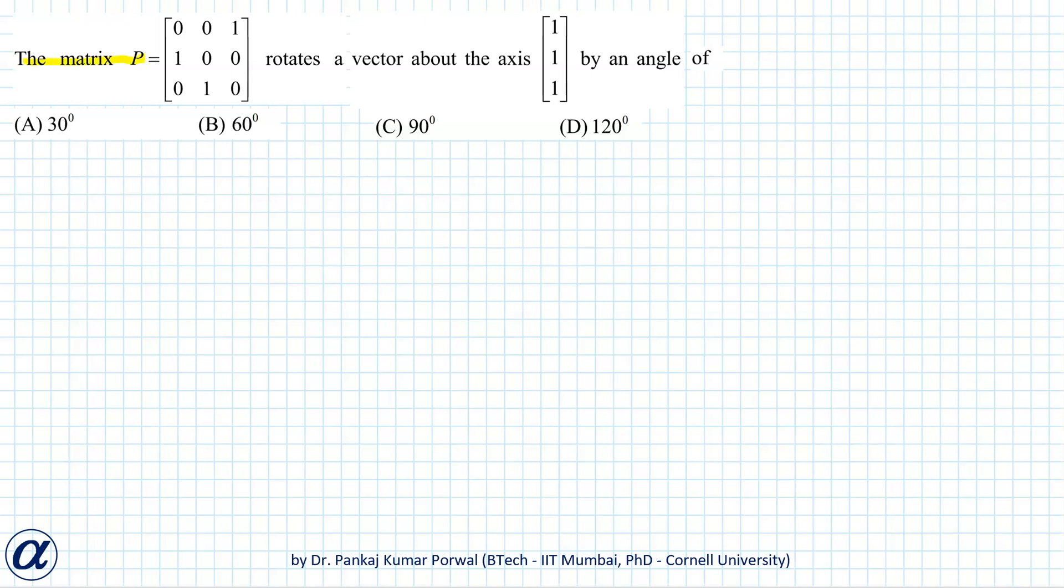In this question, we are given a matrix P that rotates a vector about the axis given by column vector [1, 1, 1] and we want to find by what angle this matrix rotates any given vector.